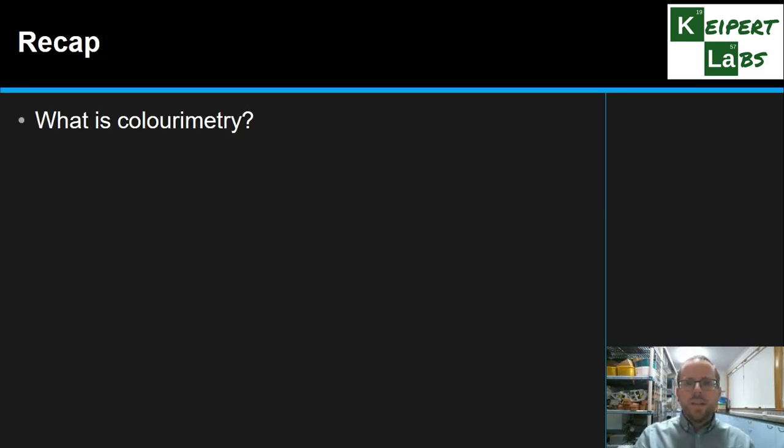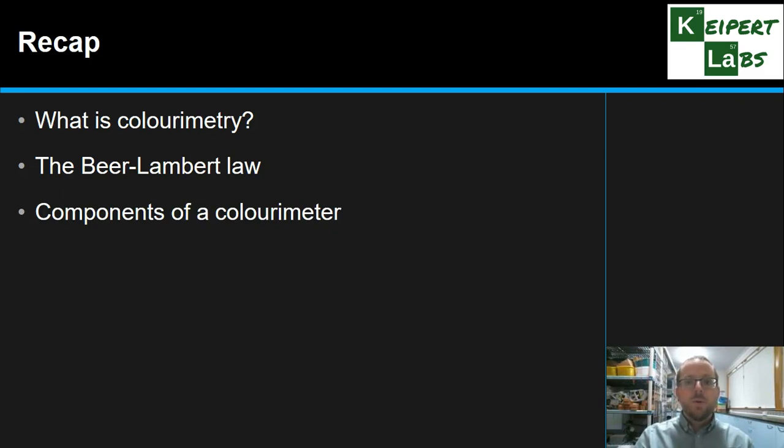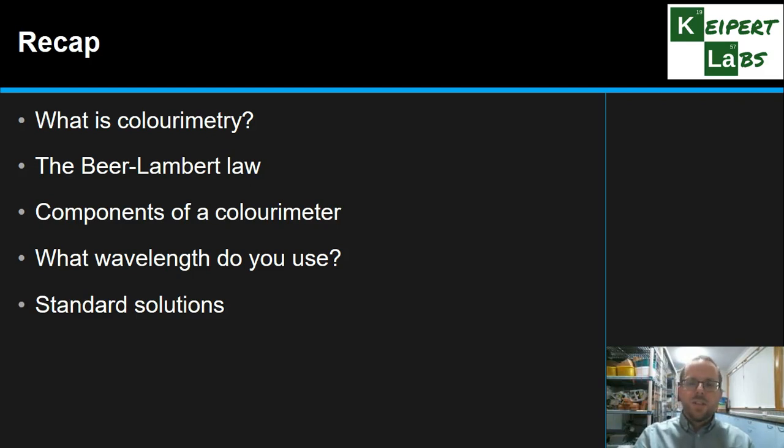So we looked at what is colorimetry? We looked at the Beer-Lambert law as the scientific principle underneath how colorimetry is able to help us determine concentration. We looked at the different components of the colorimeter and to see how they work and how they allow it to function. We looked at the concept of how you choose a wavelength and looking at complementary colors. Use of standard solutions to measure their absorbance to allow us to create a calibration line which will allow us to determine the concentration of a solution quantitatively. Thanks very much for watching. Don't forget to like and subscribe. Bye for now.